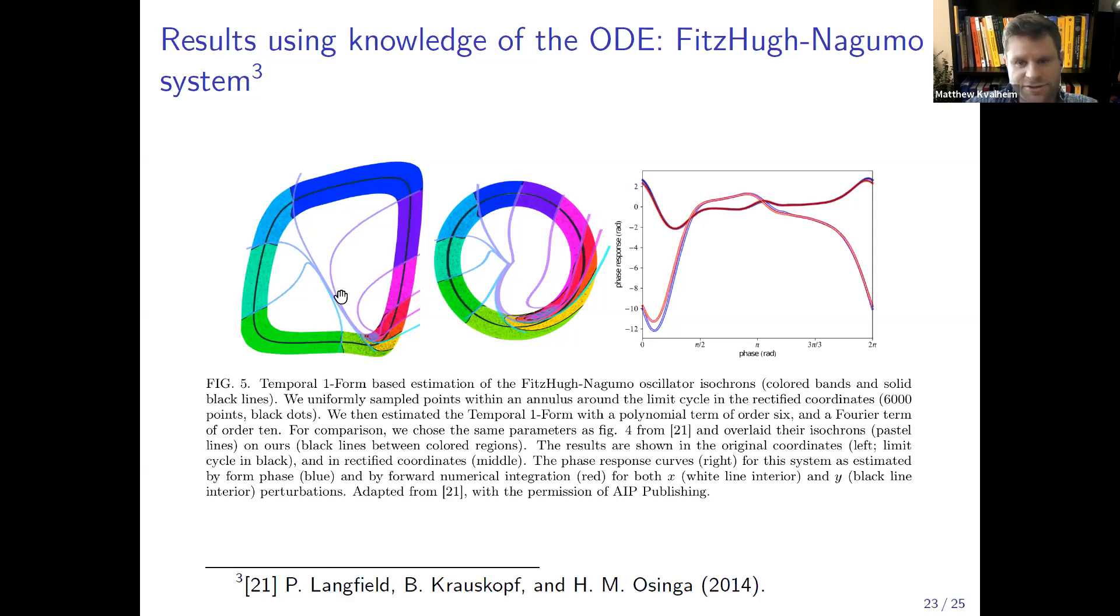The last one I'll mention is you could ask how well does our algorithm do against other state-of-the-art algorithms if we assume that we do know the equations of motion. So here we compare our algorithm to a state-of-the-art one by these guys on the FitzHugh-Nagumo system. We assume that we just have data within this little annular region around the limit cycle. What we plot here in pastel are their isochrones and then what we plot in black near the limit cycle are our isochrones. You can see that the black ones are almost perfectly overlapping the isochrones computed in their paper. On the right here we plot the phase response curves. The red is the phase response curve for one of the variables obtained by forward integration, blue is obtained from our algorithm, and we kind of match pretty closely the forward integration phase response curve.